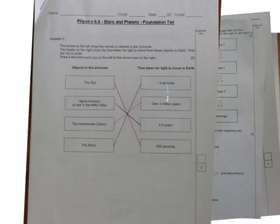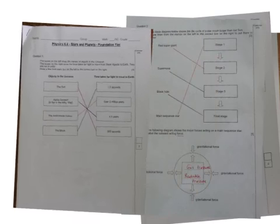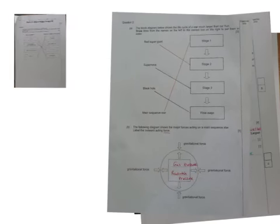So the moon I've put as 1.3 seconds. Then we've got a star and a galaxy. The Sun is the next closest, so that is 500 seconds. Then, is a star or a galaxy closer? Well, a star is gonna be closer to us, so that's 4.5 years, and then the galaxy is over 2 million years away. So it's four answers and three marks. You needed to get at least two correct for one mark, then if you get three correct you get two marks.